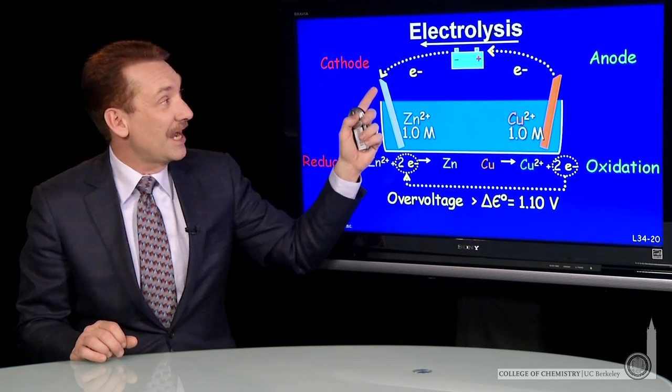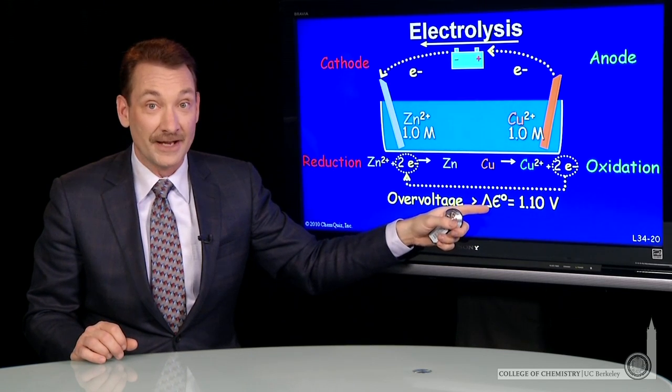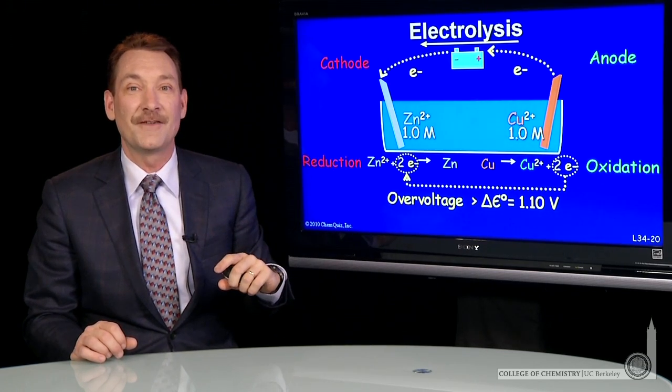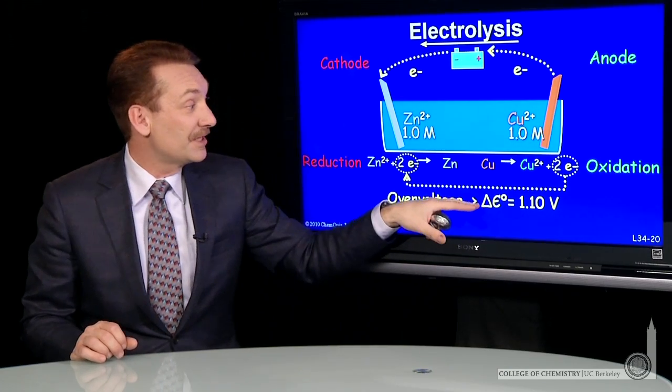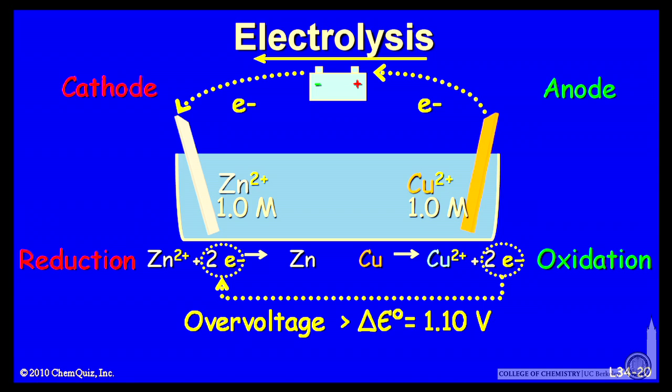To overcome the galvanic reaction, a voltage greater than the standard galvanic potential is needed. The galvanic potential for zinc-copper is 1.1 volts, so a voltage greater than that is needed to perform electrolysis.